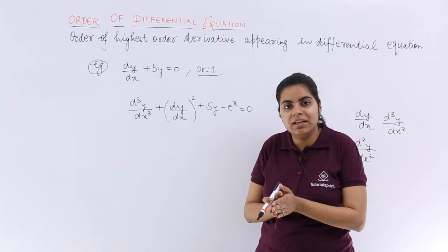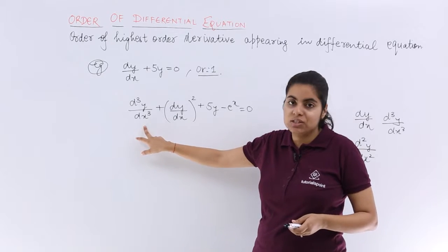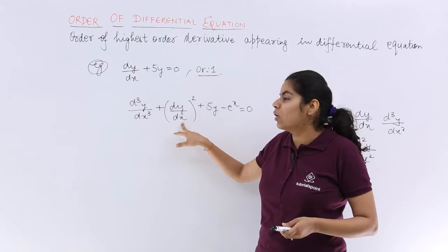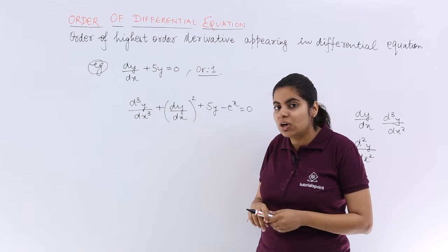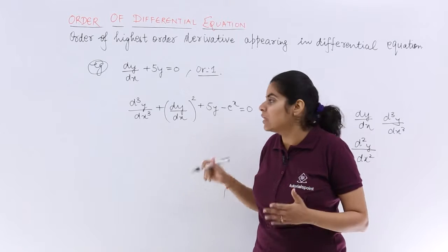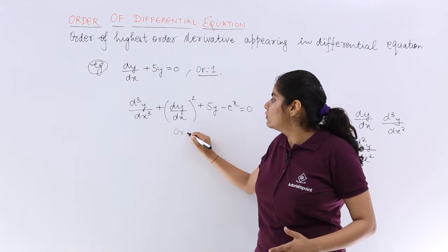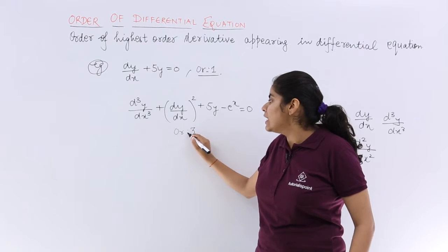Now what is the highest order derivative? Here the order is 3. Here the order is 1. So what is the highest order? The highest order among 3 and 1 is 3. So the order of this differential equation is 3.